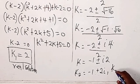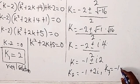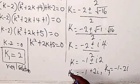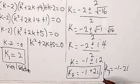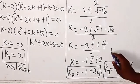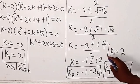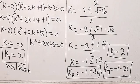So we have k2 equals minus 1 plus 2i, or k3 equals minus 1 minus 2i, while k1 equals 2. So these are the three solutions we have. Let's quickly check.